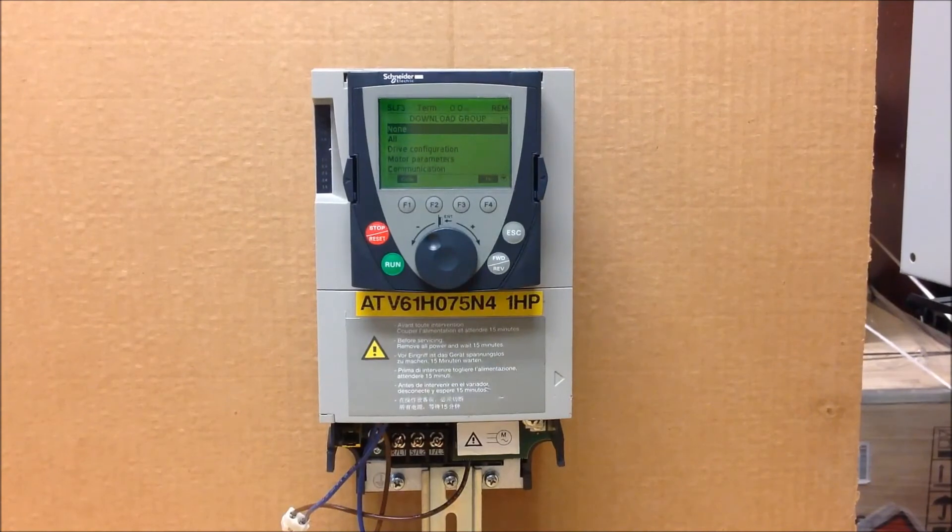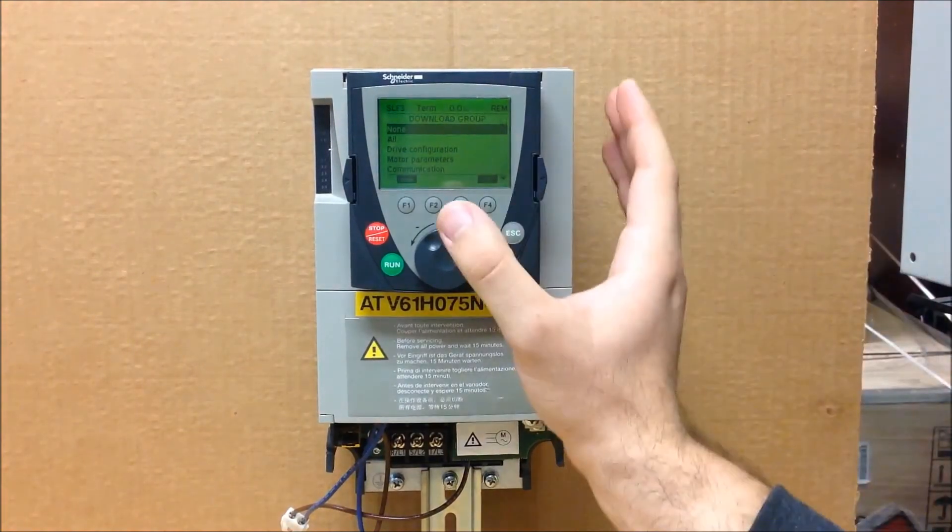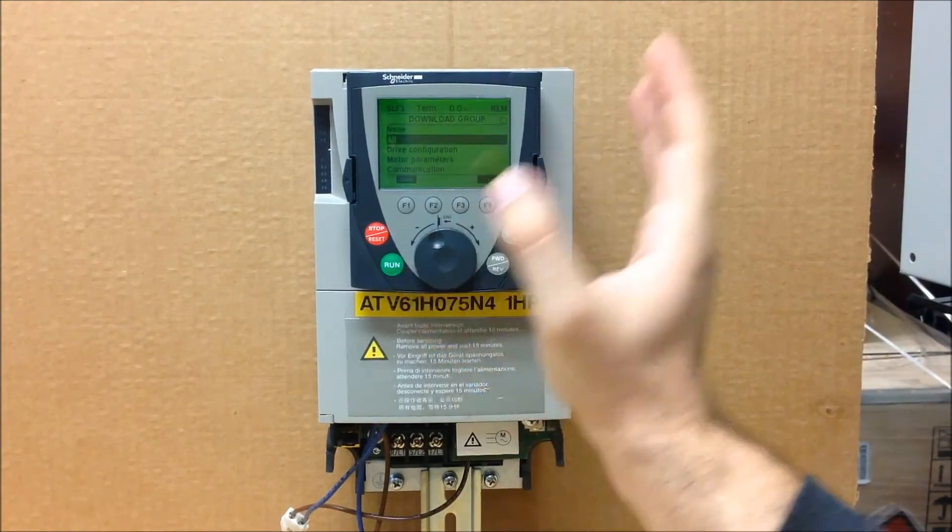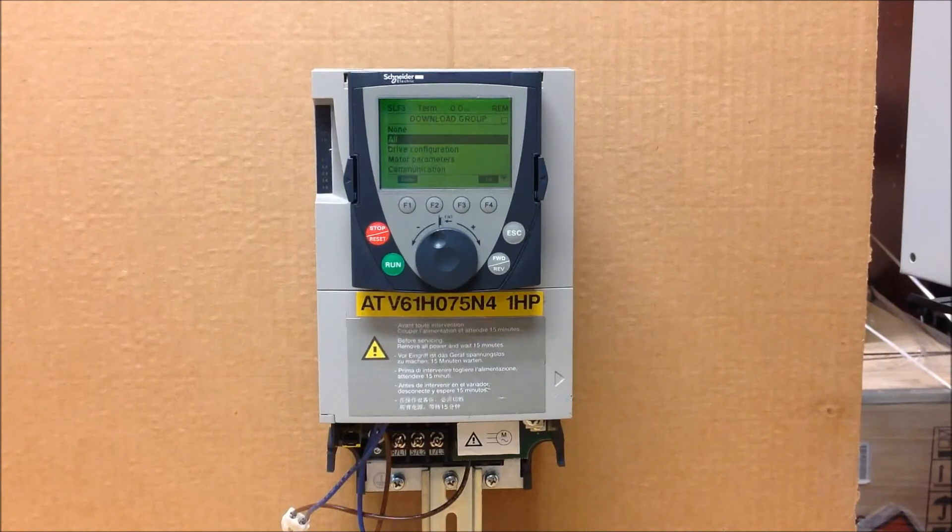Okay, so you have a couple of options here. You can choose to download all the parameters including every menu that's existing on this drive. So if it's exact same drive, exact same firmware, everything's the exact same thing, you can go ahead and choose to select all, assuming everything's wired the same as well.